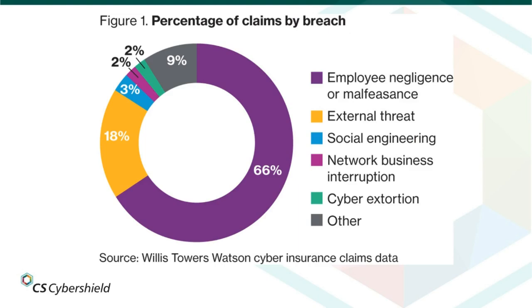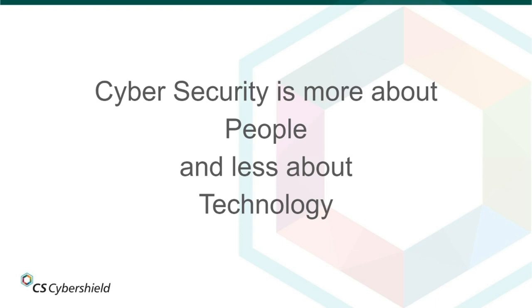Employee negligence is one of the biggest factors contributing to breaches of business security — this means the human factor. External parties and employees are generally humans, and that is where the biggest problem lies. It's either by people not being trained correctly or just negligence. It's not about the technology; it's about people. We have to create the technology and put in place all the rules, regulations, and processes to help the people using the technology.